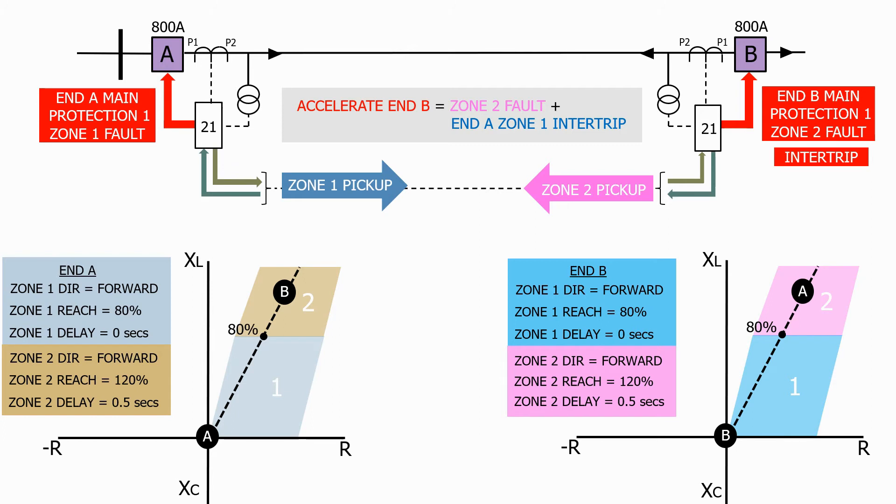So by adding the communication circuit we can now clear instantaneously any fault that appears between the current transformers on the feeder. This type of impedance relay scheme is called an acceleration scheme, as the relays use the communication circuit to accelerate the operation of the relays and remove any time delays.